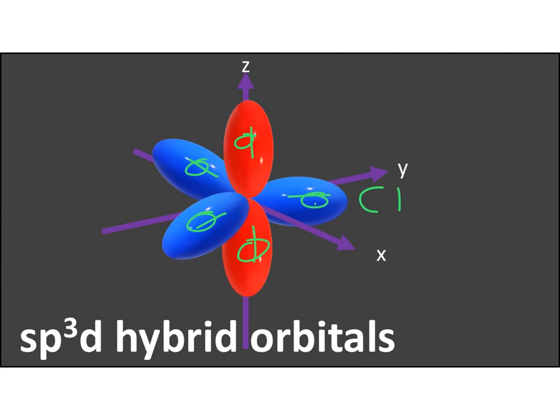And just because we've spoken about the sp2 hybrid orbitals, that's just really to try and show you how we can work out the structure. They are all, the blue and the red, they are all sp3d hybrid orbitals.